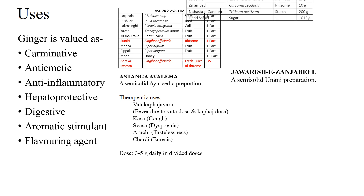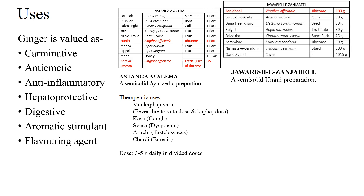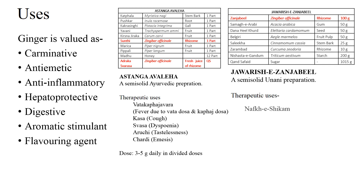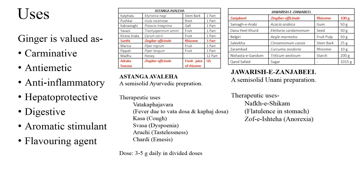Jawarish Gingivir is a semi-solid Unani preparation. Its therapeutic uses include Nafasikham meaning flatulence in stomach, Zof-e-Meda meaning anorexia, and Isal meaning diarrhea. Its dose is 5 to 6 grams.